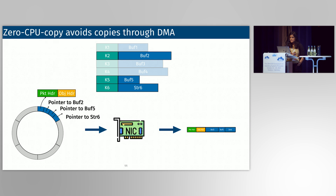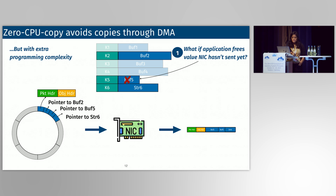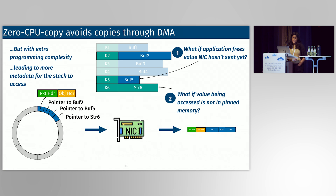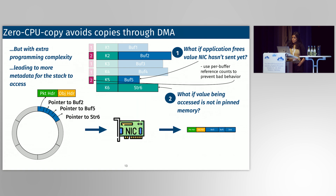This allows us to remove the copies in serialization, but it doesn't come without complications. The main complication is from extra programming complexity the stack has to offer something for. First, what happens if the application frees one of these values the NIC hasn't finished sending yet? The application could reallocate that address for a new buffer and partially fill it with new data before the NIC is finished sending the old data. The second complication is that NICs can only access pinned memory — what happens if one of the pointers we told the NIC to fetch is not in pinned memory?